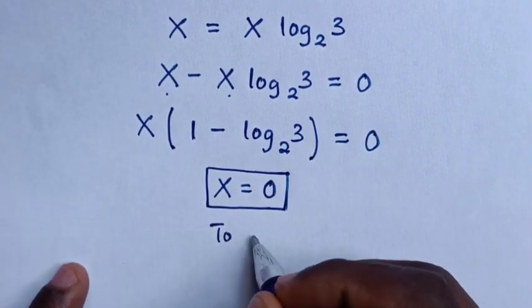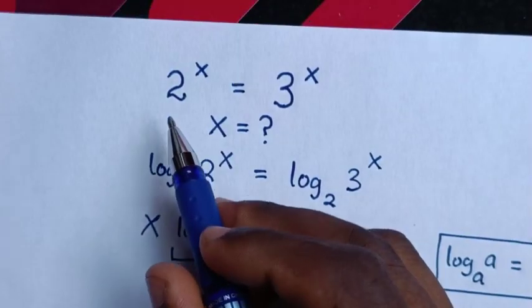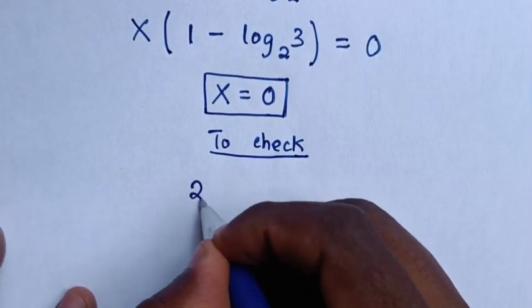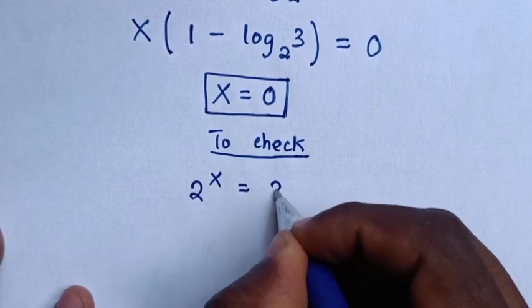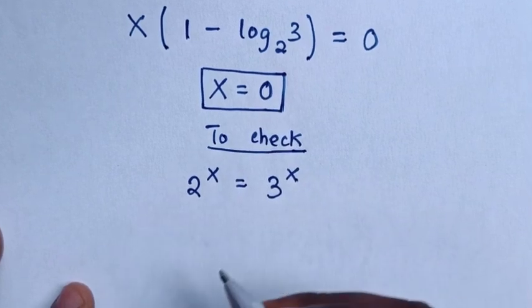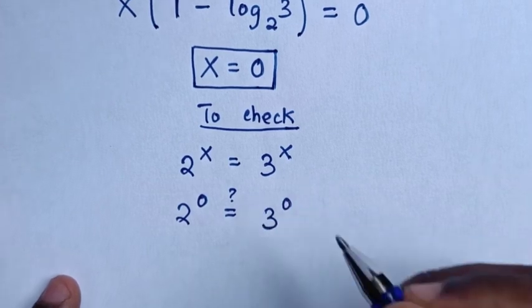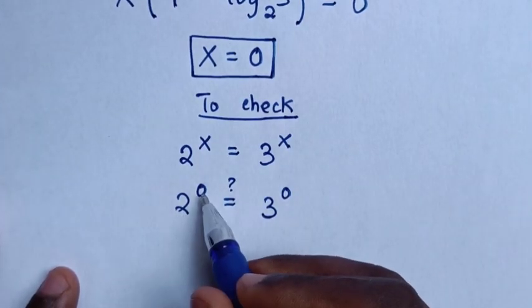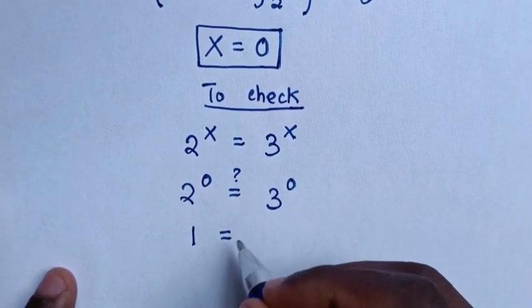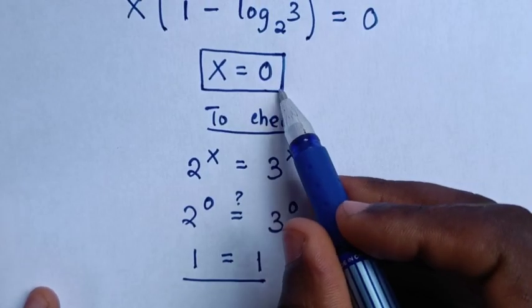Now to check if the value of x is correct, from our problem which is 2 power x equals 3 power x, we substitute the value of x which equals 0. Then it will be 2 power 0 equals 3 power 0. As any number power 0 equals 1, we get 1 equals 1. Therefore left side and right side are equal, so it is true for x equals 0.